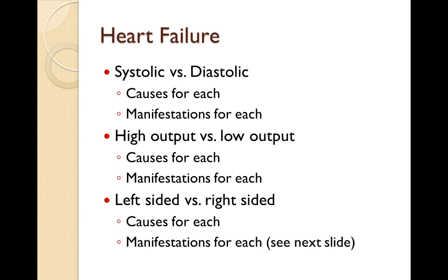Severe anemia can be one cause of high output failure — either a lack of overall red blood cells or a lack of hemoglobin — either way, oxygen delivery is severely diminished and the body tries pumping more and more blood but it's not sufficient. Thyrotoxicosis, also known as thyroid storm, will certainly develop high output heart failure. There's also Paget's disease, an abnormal breakdown and subsequent reformation of bone tissue, which is also linked to high output heart failure.